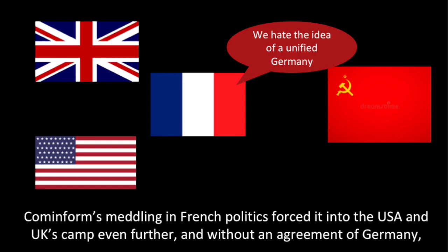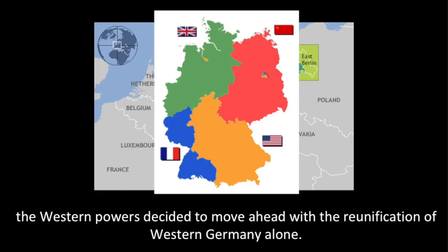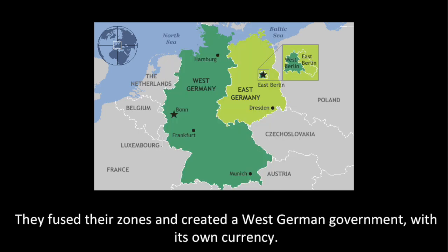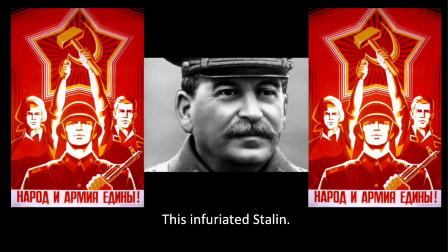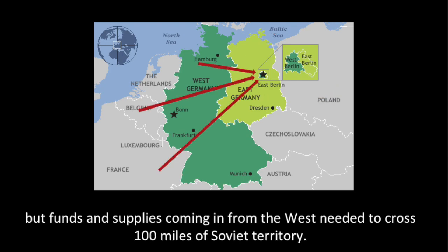Cominform's meddling in French politics forced France further into the USA and UK's camp, and without an agreement on Germany the Western powers decided to move ahead with the reunification of West Germany alone. They fused their zones and created a West German government with its own currency. This infuriated Stalin, who saw Berlin as his opportunity to hit back at the West.